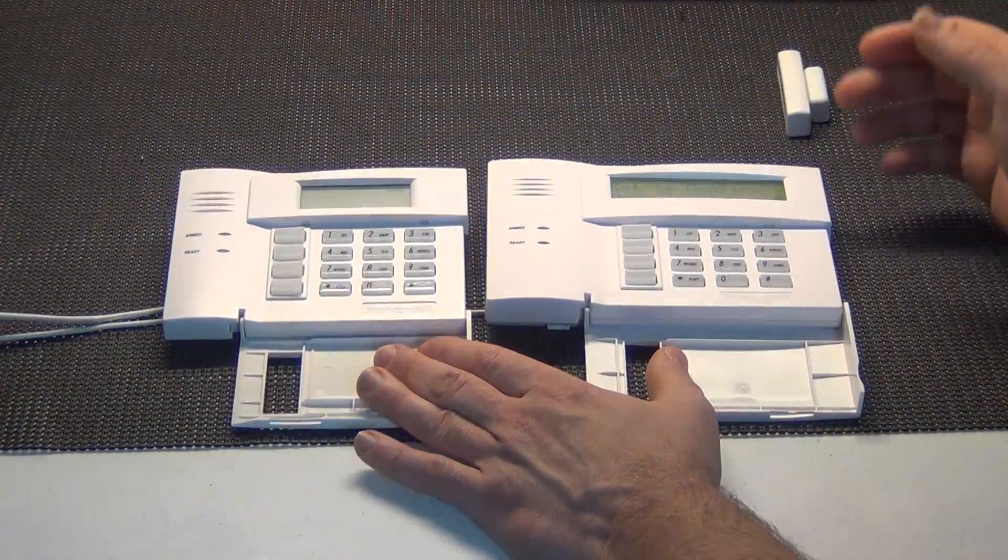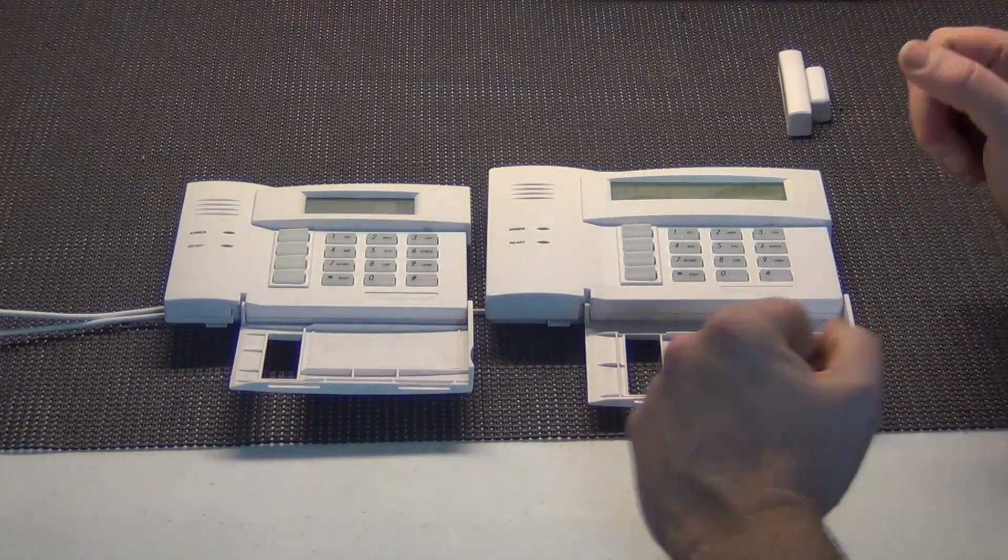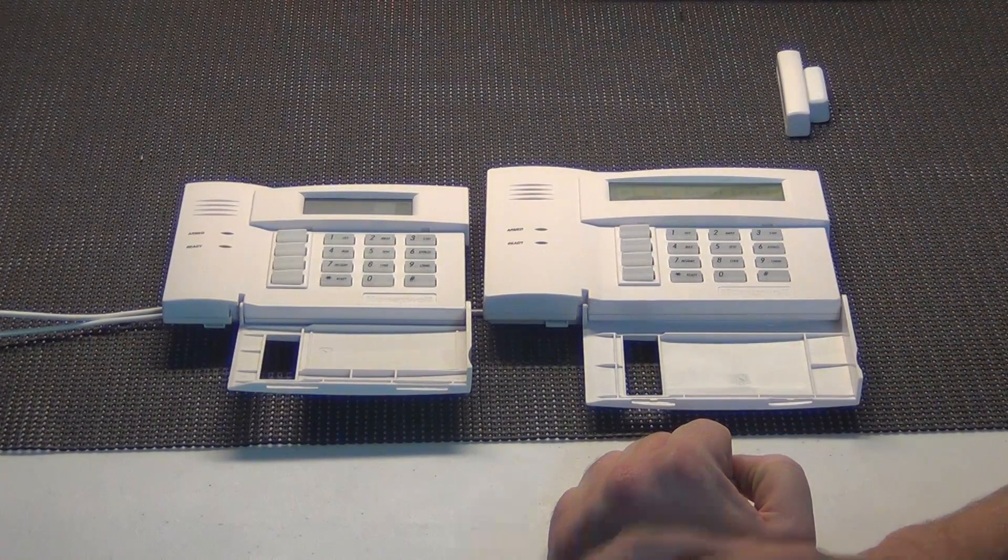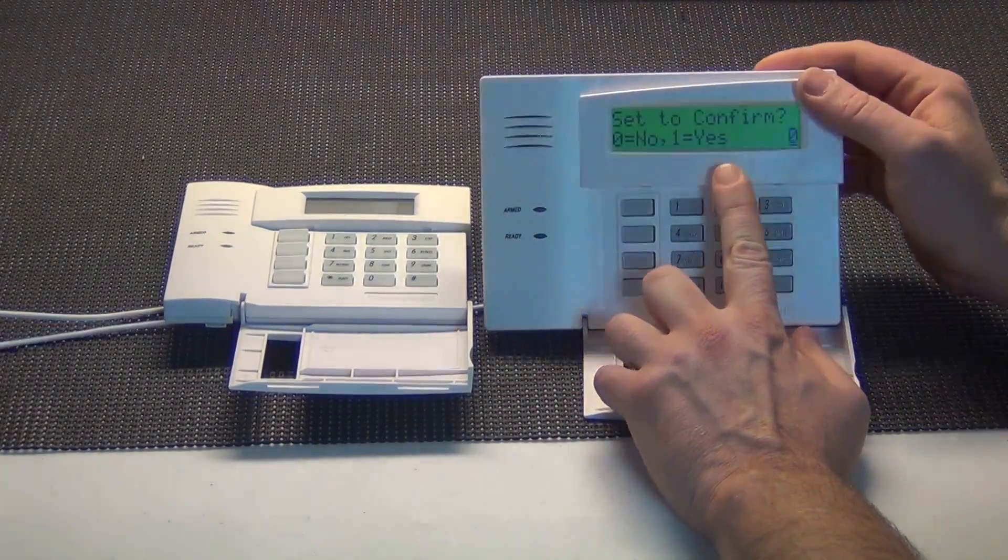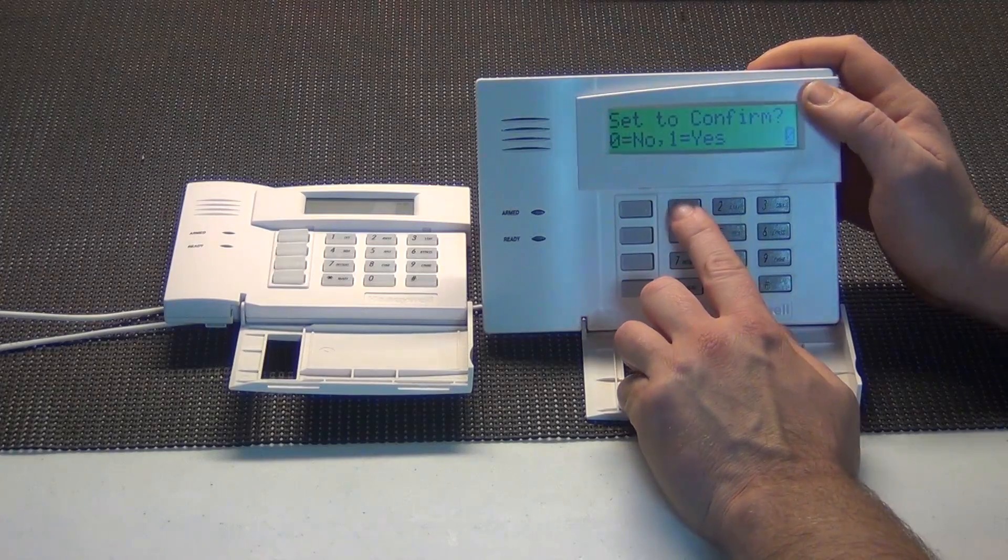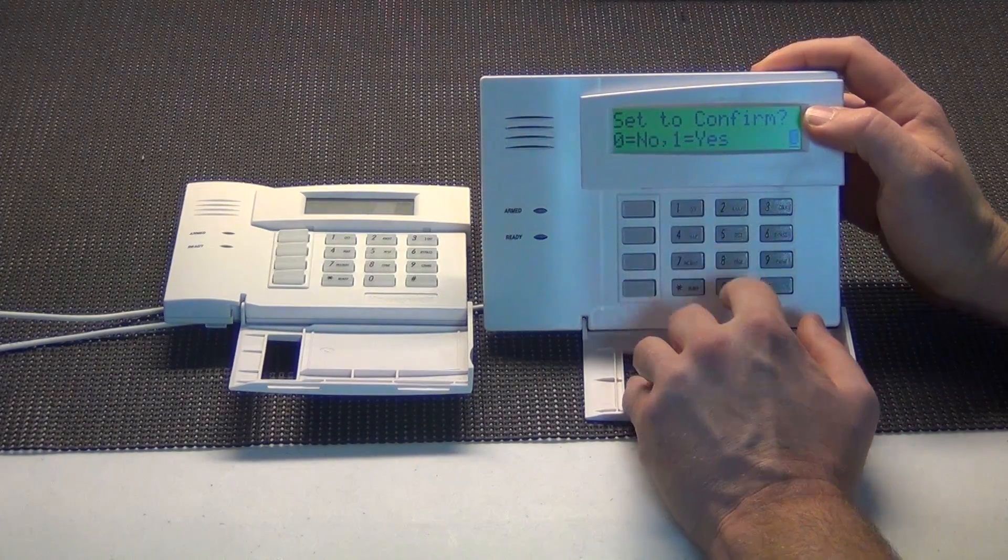So that's why we always recommend for people to get at least one 6160 with their hardwired alarm system, because it makes programming a lot easier. You're going to be able to see your programming sections, all the stuff in your programming sections. Let's go ahead and go deeper into this section and show you what I'm talking about here.